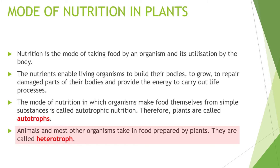They are called heterotrophs. Jo animals aur doosre organisms hai — other organisms mein human beings bhi included hain. Animals and human beings donon hi apna food jo plants banate hai wahan se lete hai, so they are categorized as heterotrophs. This type of mode of nutrition is called heterotrophic nutrition.